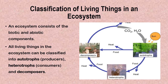Moving along, we are going to be classifying living things in an ecosystem. An ecosystem consists of the biotic and abiotic factors or components. All living things — the biotic factors — in the ecosystem can be classified into autotrophs. Autotrophs are living organisms that produce their own food and they are also called producers. They are called producers because they produce their own food using the energy from sunlight and inorganic materials like water and carbon dioxide to manufacture their own food through photosynthesis.